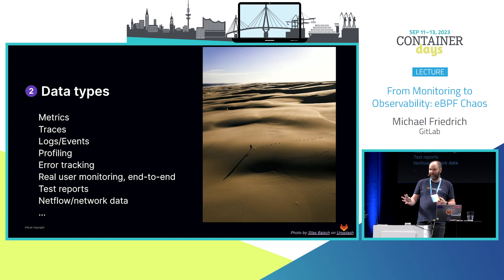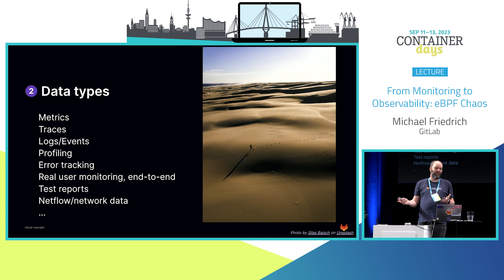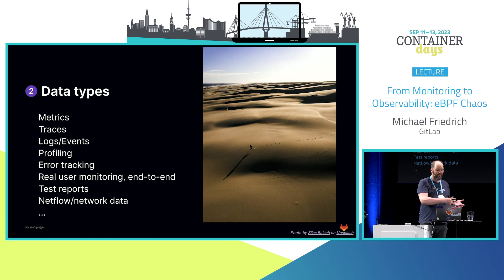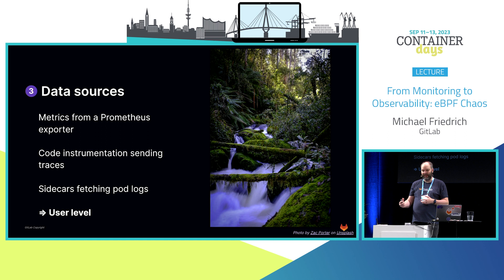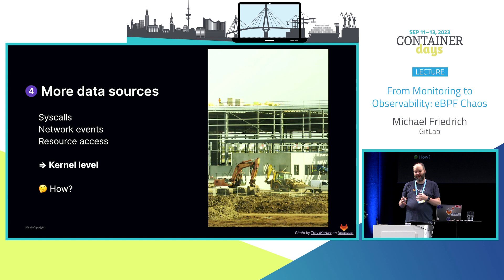There are different data types — I call them pillars. We have metrics, traces, logs. We will have profiling, and OpenTelemetry announced last week they'll be adding it as a supported data type. You might also have error tracking, real-time user monitoring, test reports, and network monitoring like NetFlow — everything can be a type correlated within observability. We have different data sources like Prometheus exporters, traces from code or auto-instrumentation, logs collected in sidecars. But these are all user-level. If we want to go deeper, we need something else — fetching syscalls, network events, resource access that needs kernel-level access.